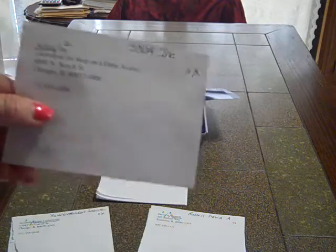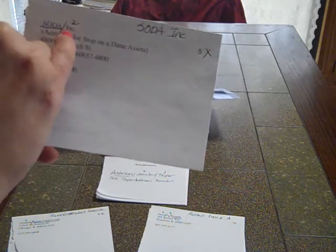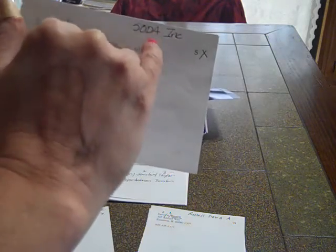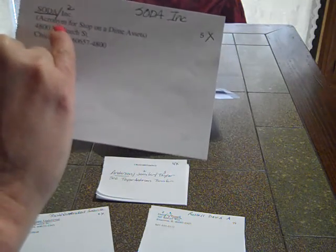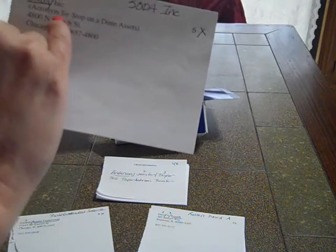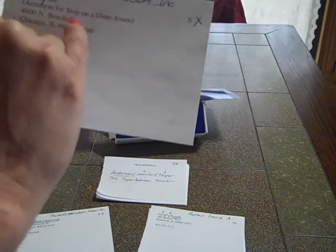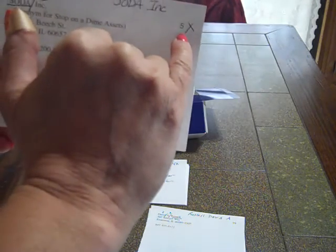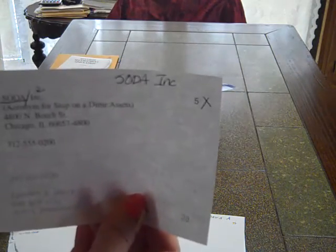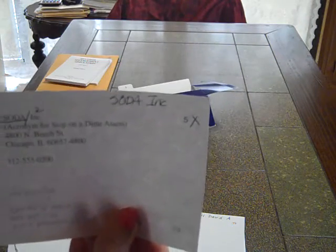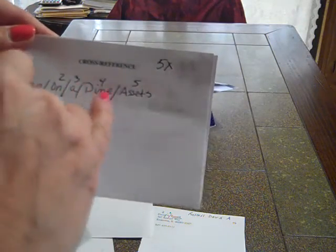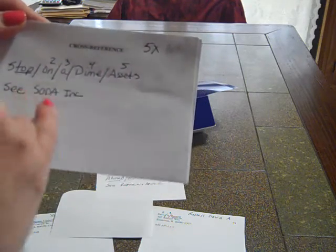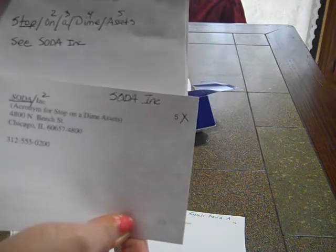Number five is Soda Inc. Remember no punctuation — Soda Inc. Look under the acronym for Stop on a Dime Assets, because it could be referenced by that name. So we need to put an X here as a cross reference: 5X, Stop on a Dime Assets, C, Soda Inc.